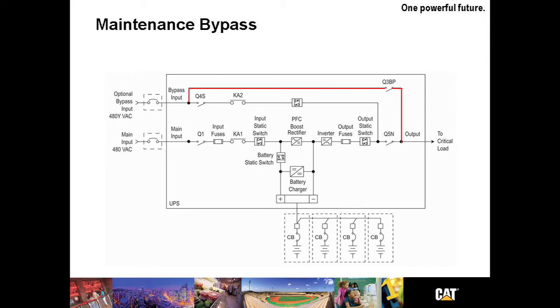Let's talk about maintenance bypass for a moment. The CAT UPSB-130 has a distinct advantage in that it offers an internal maintenance bypass. This allows the load to be powered by the utility or genset while being serviced.